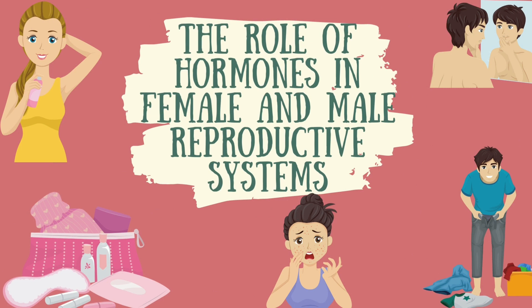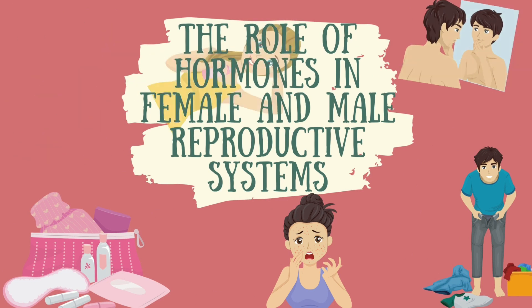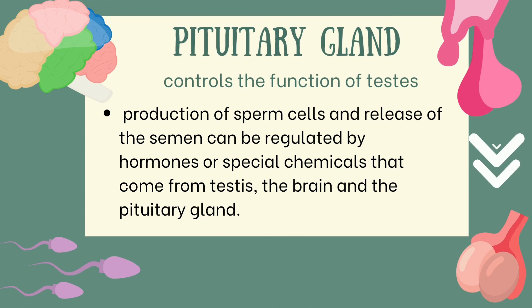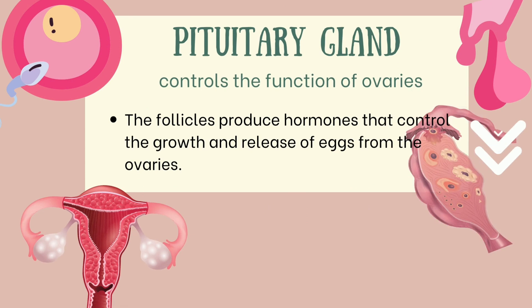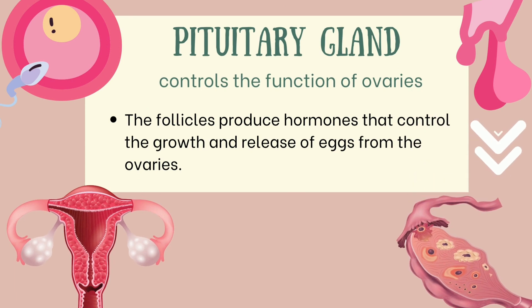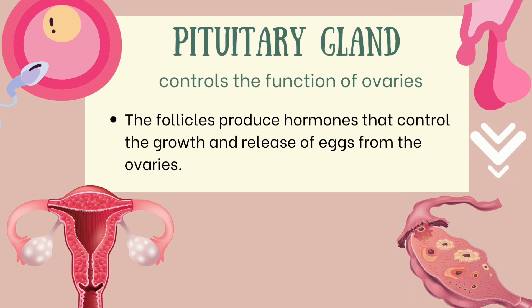Now, let us discuss the role of hormones in female and male reproductive systems. First, we have the pituitary gland. It controls the functions of the testes. Production of sperm cells and release of semen can be regulated by hormones. The pituitary gland also controls the functions of the ovaries. The follicles produce hormones that control the growth and release of eggs from the ovaries.